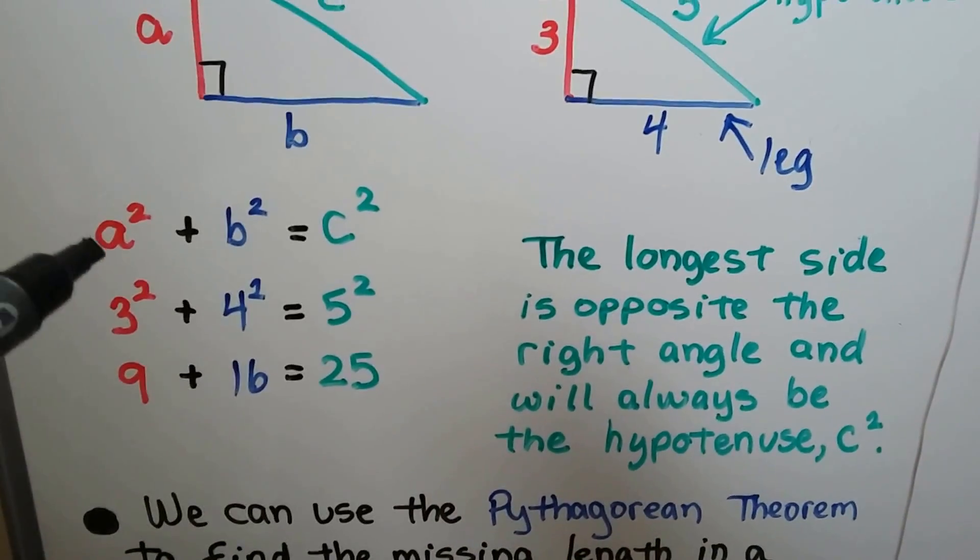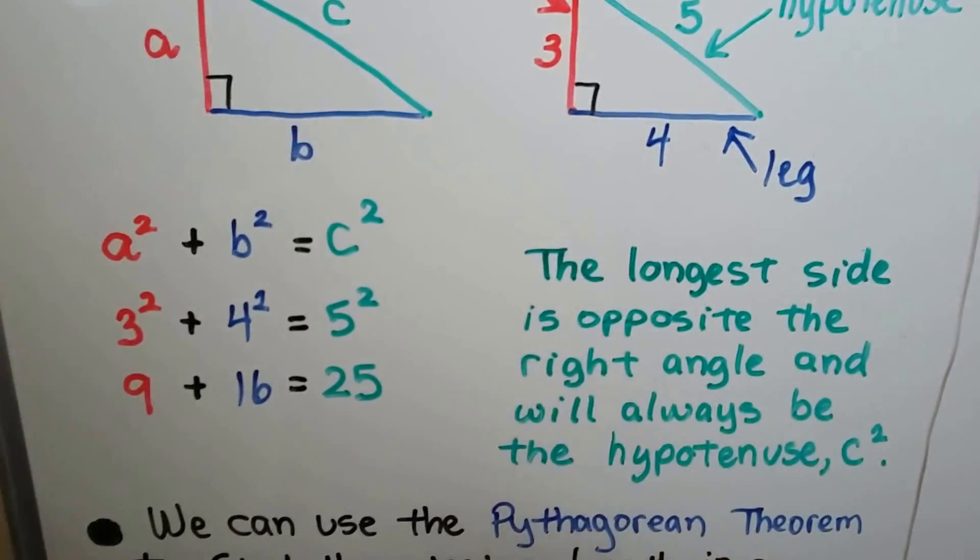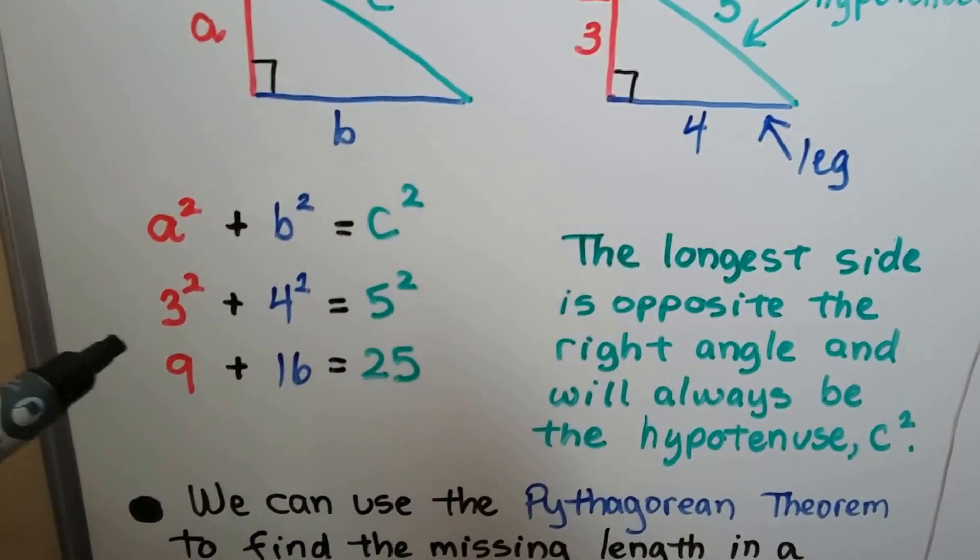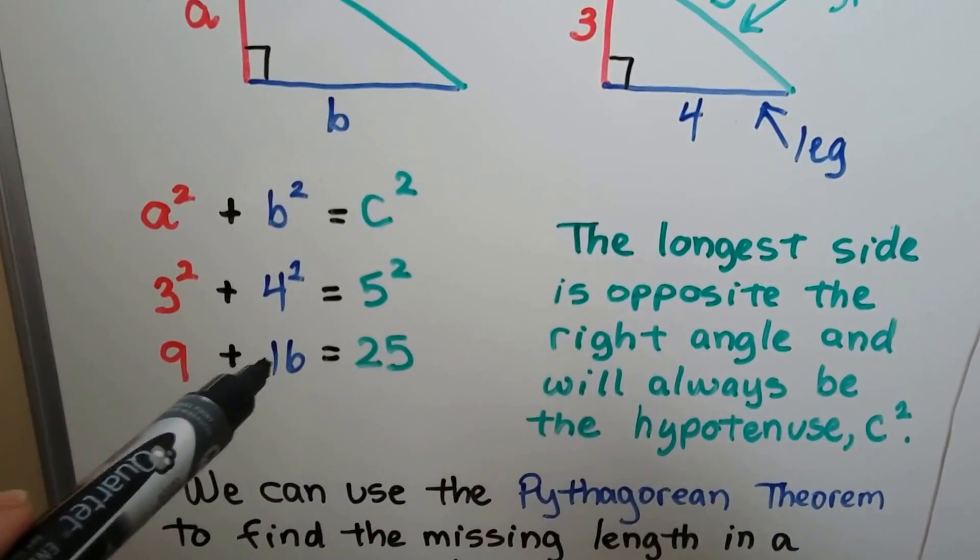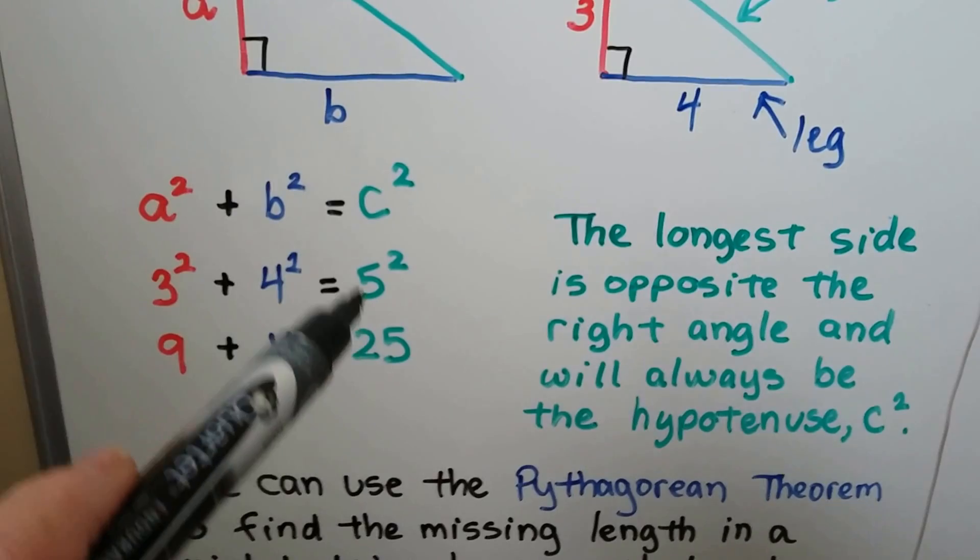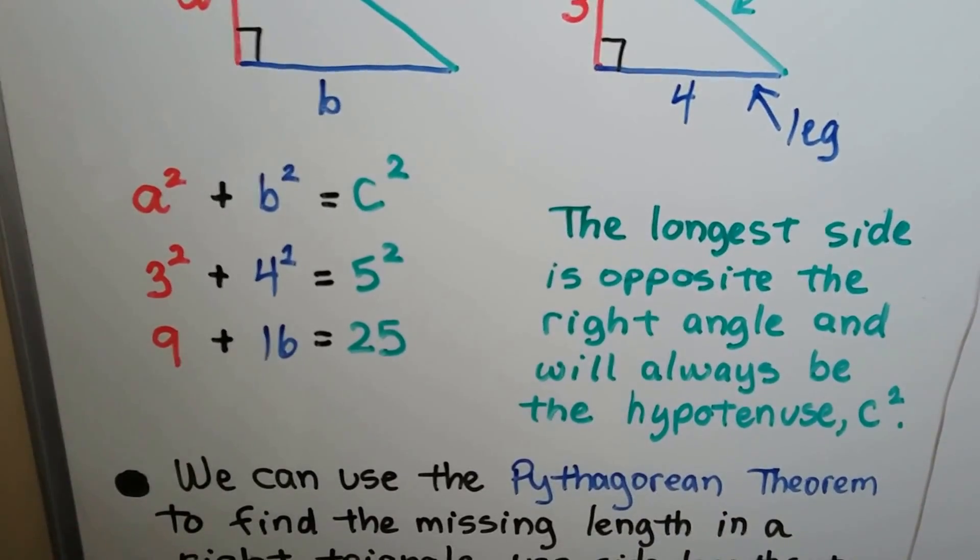So just like here, we would do a squared plus b squared equals c squared. So we would do 3 squared plus 4 squared equals 5 squared. And 3 squared, 3 times 3 is 9, plus 4 times 4, which is 16, will equal 5 times 5, which is 25. So yeah, it works.